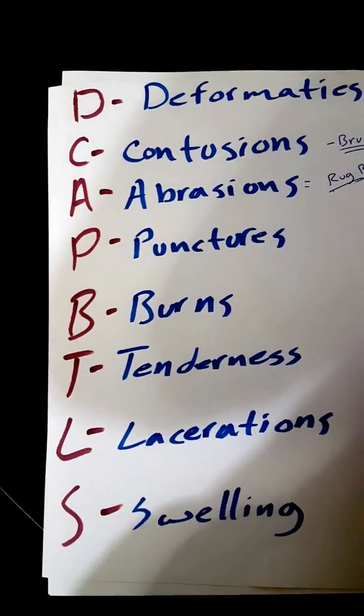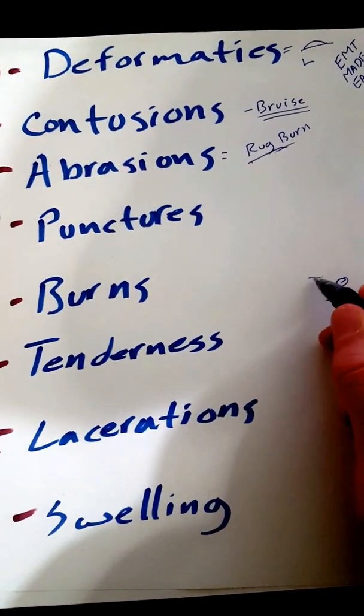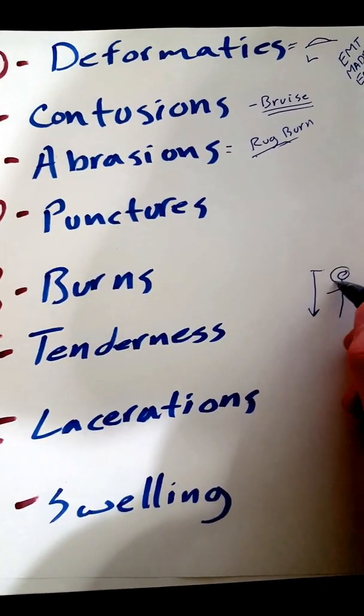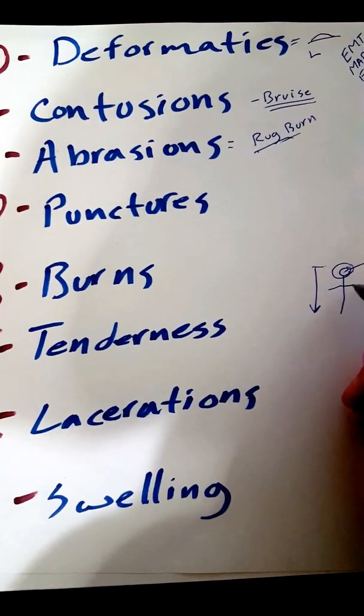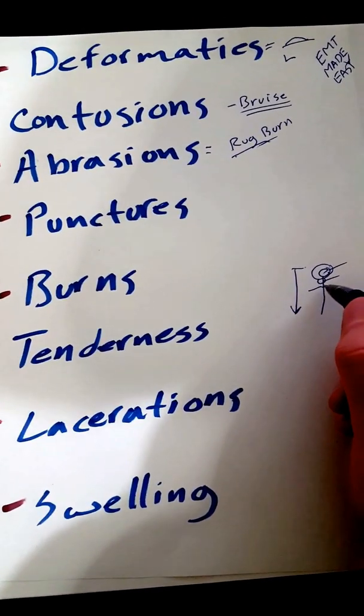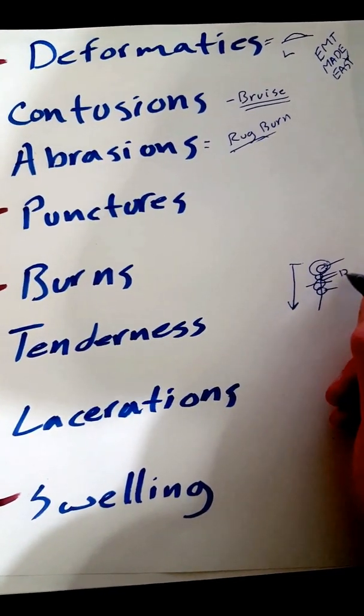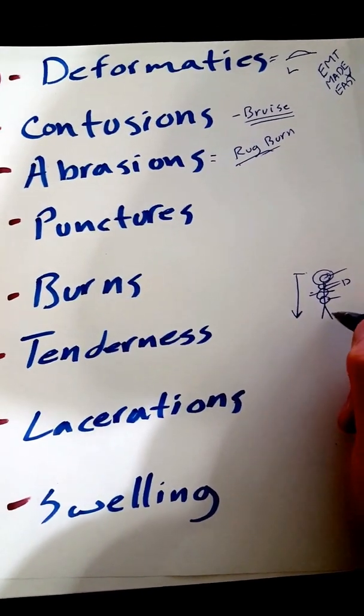DCAP-BTLS is what you're looking for when you're checking your patient from head to toe. When you're checking the head, you're checking for DCAP-BTLS. The neck, you're checking for DCAP-BTLS. The thoracic cavity, abdominal area, you're checking for DCAP-BTLS. Extremities.